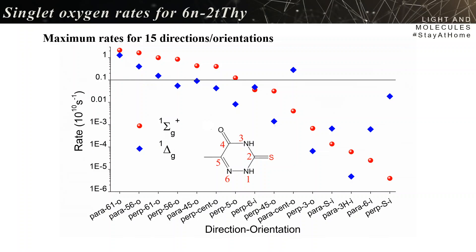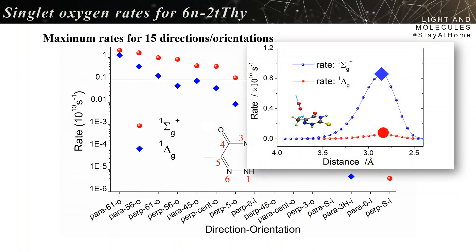And for each one of them, you computed the rates as a function of the distance, giving a picture like this. And then what you see in the main graph is the maximum of the rate, the top of the curve.